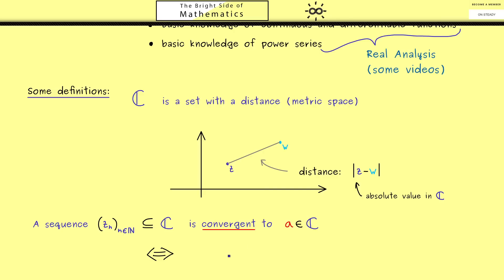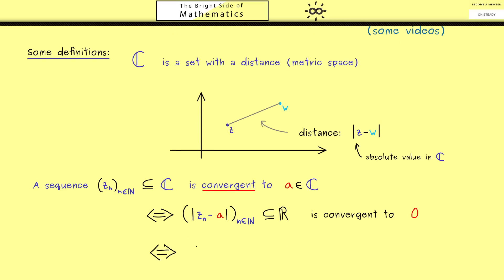This means we can look at a sequence of real numbers, namely the sequence of the absolute value of z_n minus a. This is a sequence of non-negative real numbers. In the case that this sequence goes to the limit 0, we call the sequence z_n convergent to a. The definition says for all positive epsilon, there exists an index N such that for all indices n greater or equal than N, the distance between z_n and the point a is less than epsilon. This is exactly the definition we learned in real analysis.